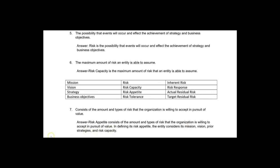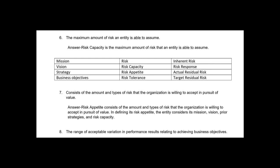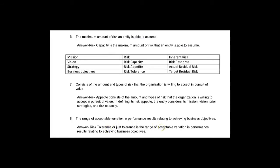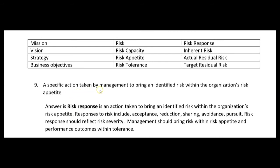In defining risk appetite, the entity considers its mission, vision, prior strategies, and risk capacity. Number eight: the range of acceptable variation in performance results relating to achieving business objectives — that's tolerance, sometimes called risk tolerance. COSO calls it risk tolerance; ERM just calls it tolerance. Notice the difference: risk appetite describes the amount of risk the organization is willing to accept in pursuit of value, while tolerance is the range of acceptable variation in performance results.